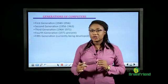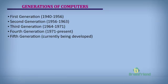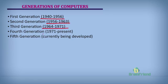There are five generations of computers. The first generation ran from 1940 to 1956, the second from 1956 to 1963, the third from 1964 to 1971, the fourth from 1971 to the present, and the fifth generation is currently being developed.